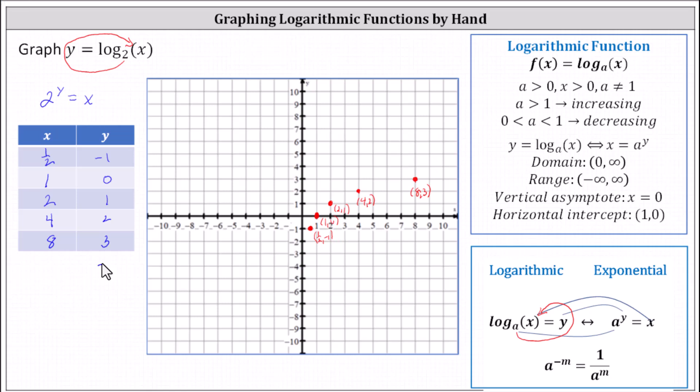Notice if y is negative two, then we have two to the power of negative two equals x, and x equals one divided by two squared, or one fourth, which would be approximately here.